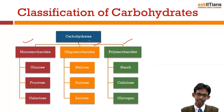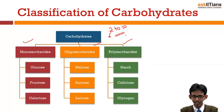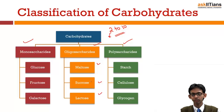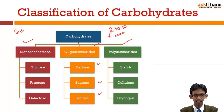Oligosaccharides contain 2 to 10 monosaccharide units joined together. If they have 2 units they are called disaccharides, 3 units trisaccharides, and 4 units tetrasaccharides. The most important oligosaccharides are disaccharides — maltose, sucrose, and lactose are examples. Monosaccharides and disaccharides are known as sugars because they have a sweet taste and are soluble in water.